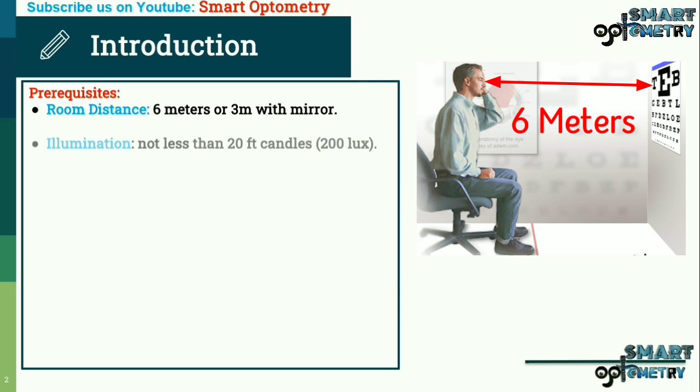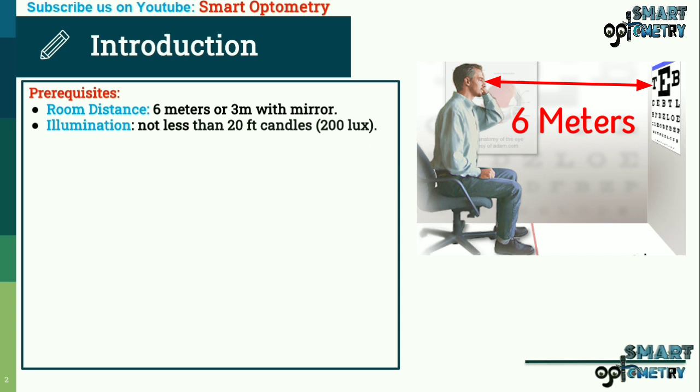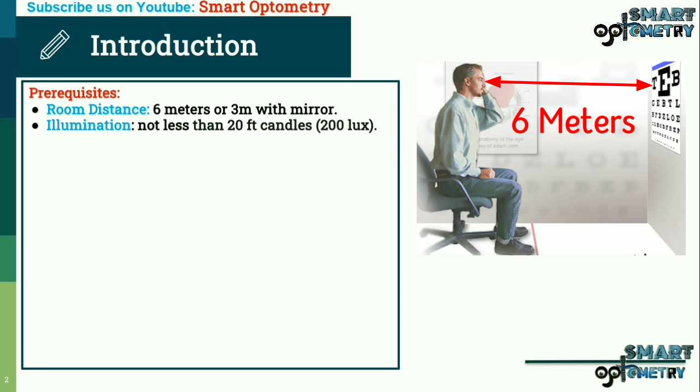The second prerequisite is illumination. Illumination should be daylight condition, not less than 20 foot candles or 200 lux.